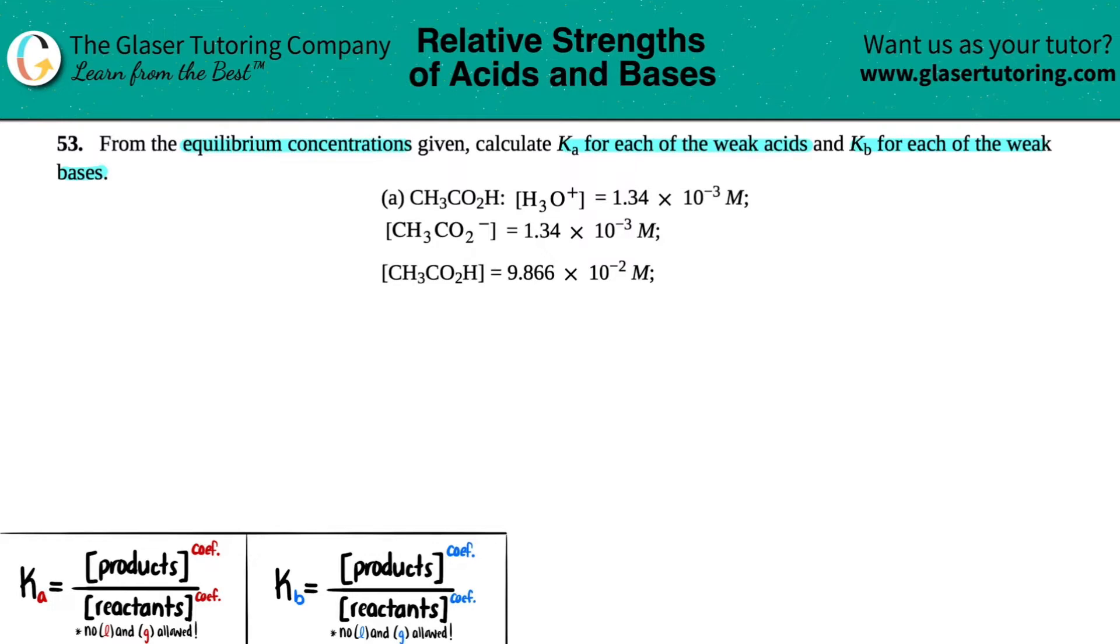Since they told us that we are producing H3O plus, remember H3O plus is hydronium. If you produce hydronium in a solution, this would be an acid, and this might look very similar to you. This is acetic acid.